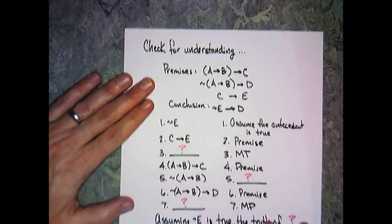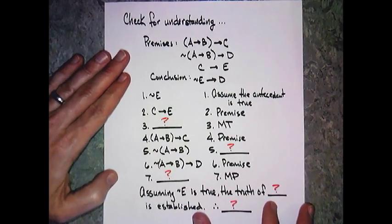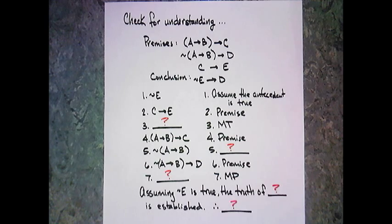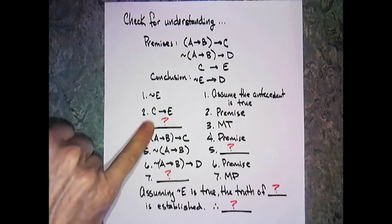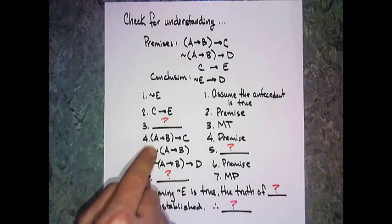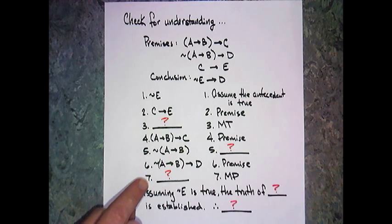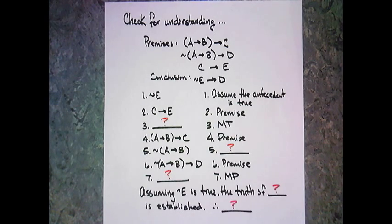The check for understanding today is a proof. The premises are: if A then B then C (notice those are in parentheses - treat those as one), and if not the case if A then B then D, and another premise C then E. Our conclusion is if not E then D. Now what I've done is I've laid out the whole proof for you, and I want you to fill in the blanks. There's line three - what goes here? There's line five - the reason I got to five. Line seven - how that comes. And then finally fill in the statement at the end. I hope this makes sense and we'll see you soon.